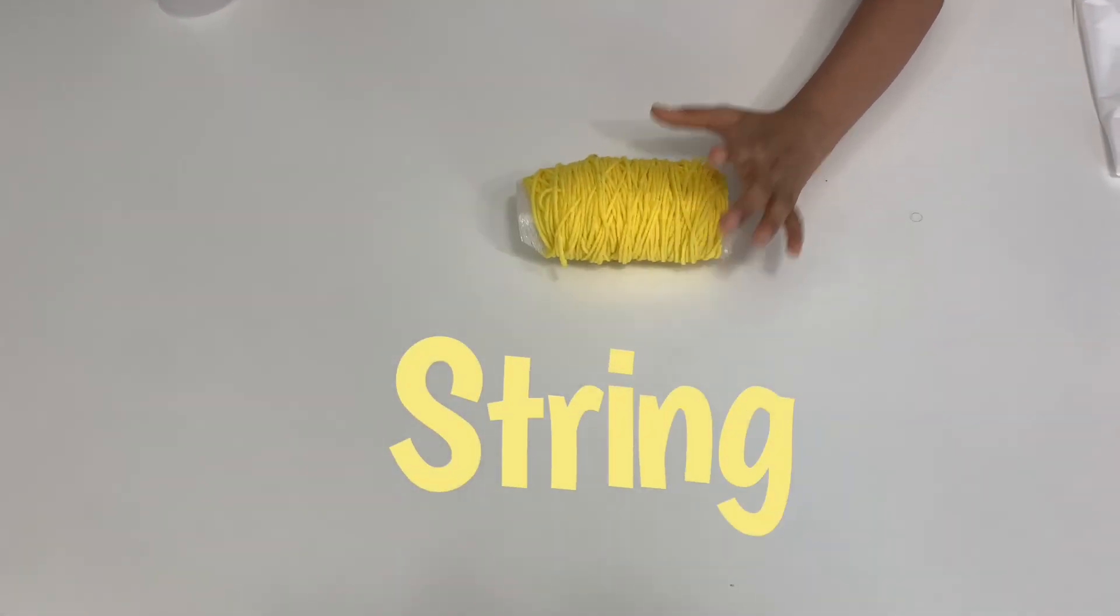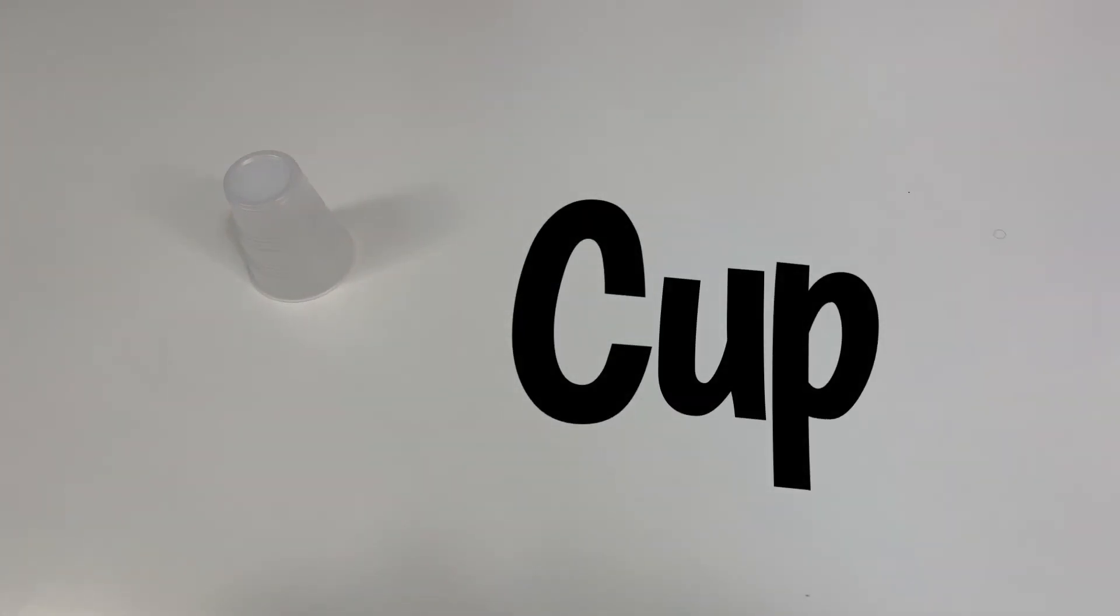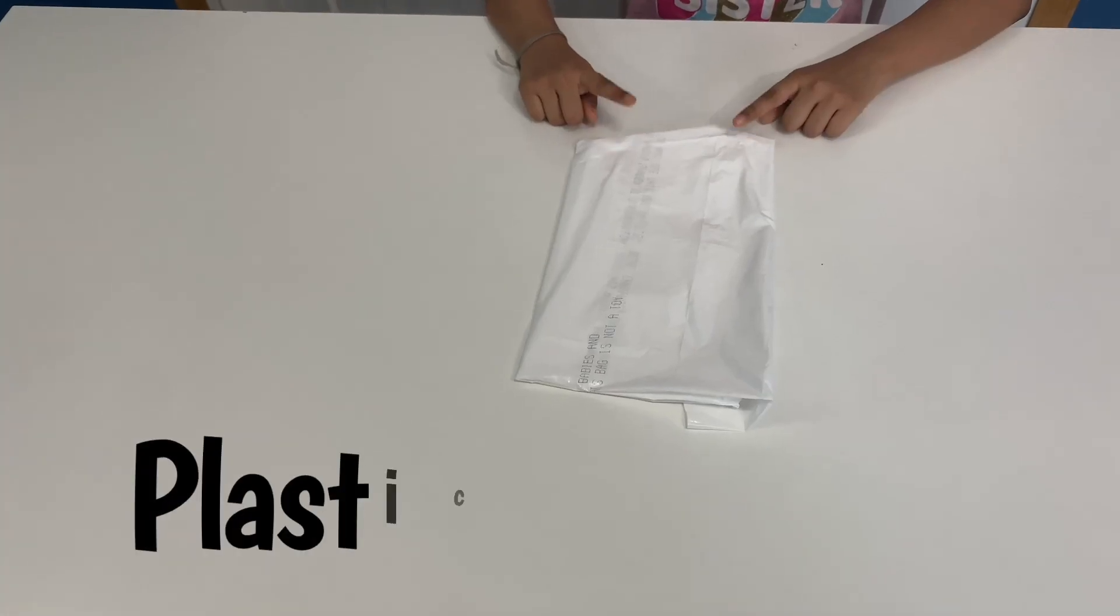To make this parachute, you'll need string, a cup, and a plastic bag.